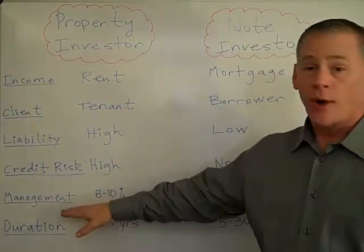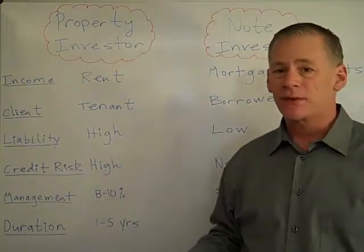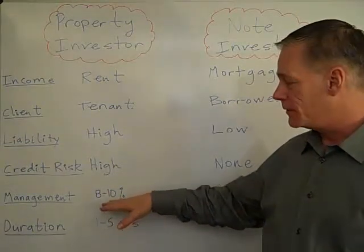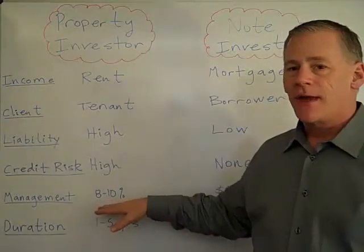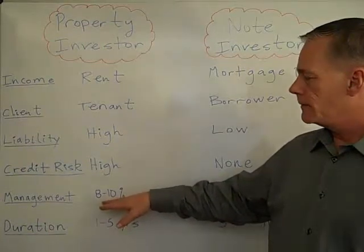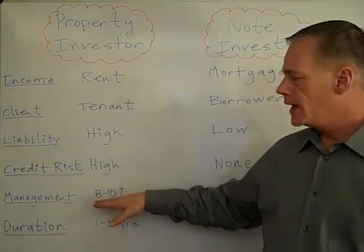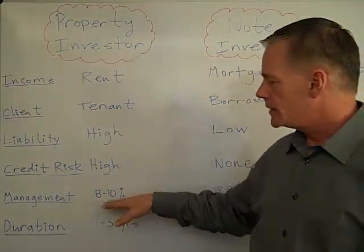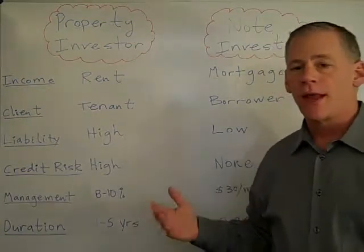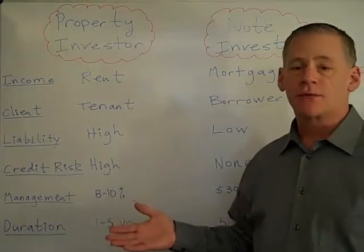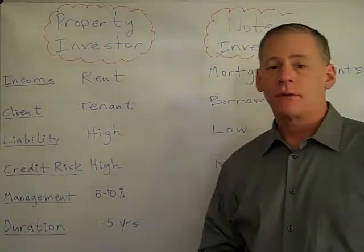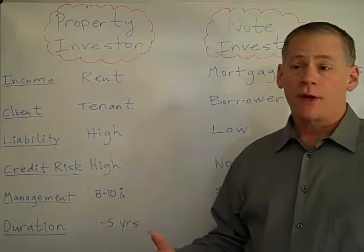Now let's take a look at management. For property management, most property owners are paying between 8 and 10 percent — and 10 percent may not be enough to have them do a good job. Then you can add another 10 percent for a vacancy factor, so you're up to between 16 and 20 percent. Whereas as a lender, $30 a month is what you would pay for that loan to be serviced — some servicers only charge about $15 a month. There isn't any maintenance because the borrower takes care of the property — they're caring for your collateral.